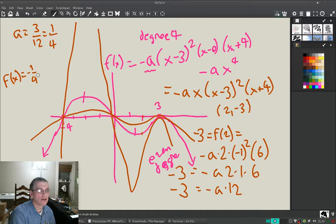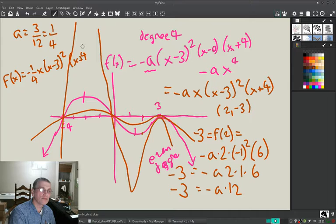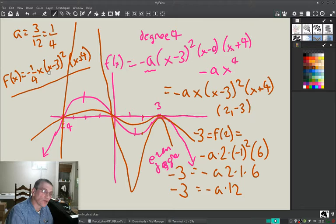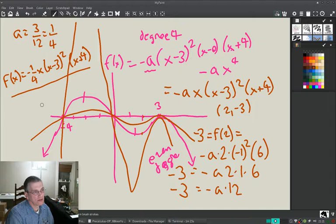So our final equation, my custom personal equation, is minus one fourth x (x minus three) squared (x plus four). Isn't that beautiful? It's a power four, it's a degree four polynomial, turns three times - that's the most it can turn.